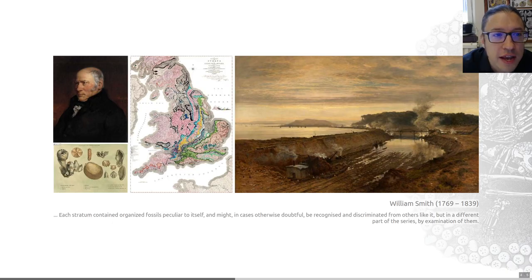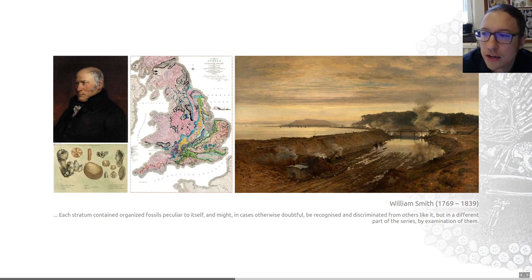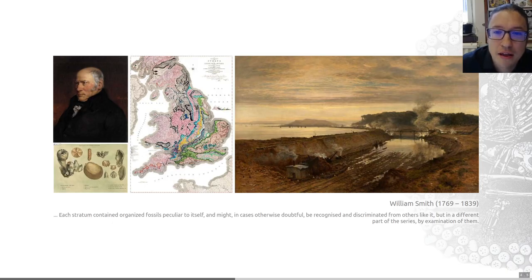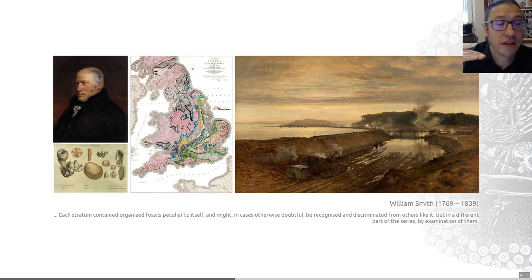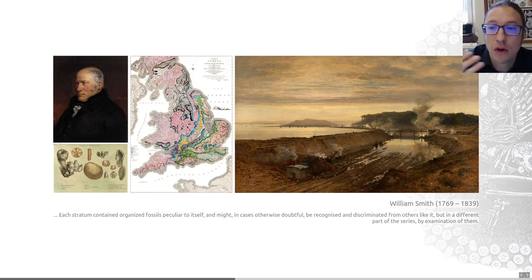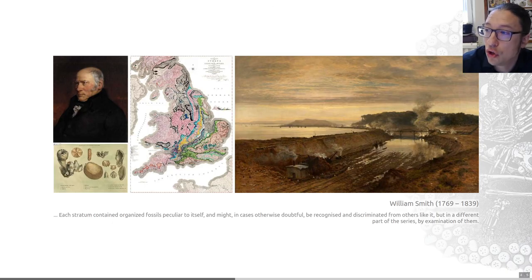One of the keys to his success as a scientist is that he noted that each layer could be identified by the fossils it contained. He came up with this idea, which we now call the principle of faunal succession — it just reflects that life evolves through time and the fossils you find in rocks of different ages vary through time. Fossils became his principal line of evidence for a very famous map of the geology of the UK, shown on the slide here.